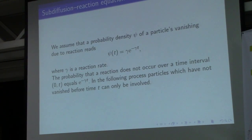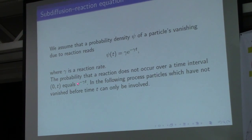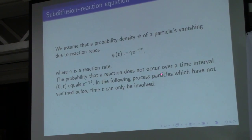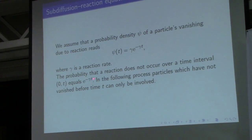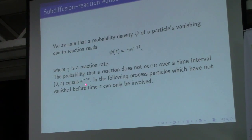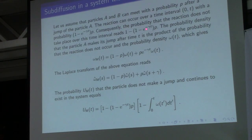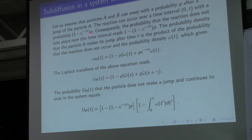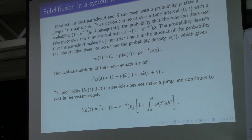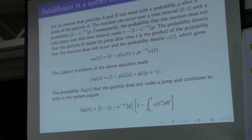Gamma is the reaction rate. The probability that the reaction does not occur in a given time interval equals this function. We introduce a parameter P, which is the probability that particle A can meet particle B. We assume the following reaction scheme.